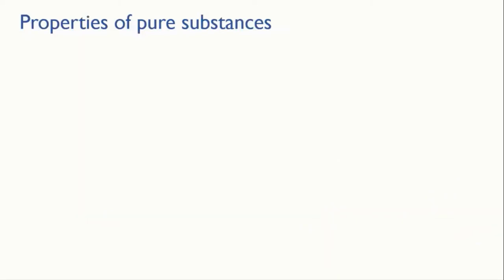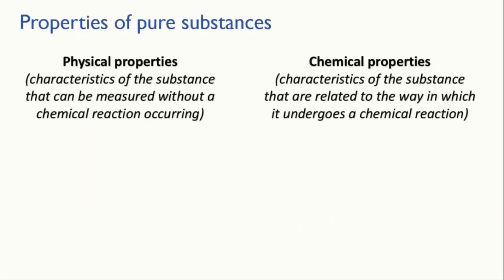We can divide properties into physical properties, those that are intrinsic to the substance as it is, without a chemical reaction having to occur, and chemical properties, those that show up when the substance undergoes a chemical reaction.